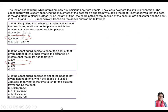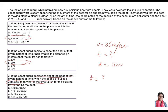Coming to part three: if the Coast Guard decides to shoot the boat and the speed of the bullet is 36 meters per second, what is the time taken? Speed V = 36 m/s, distance = 3 meters. Time = distance ÷ speed = 3 ÷ 36 = 1/12 seconds. So D is the answer for this part.